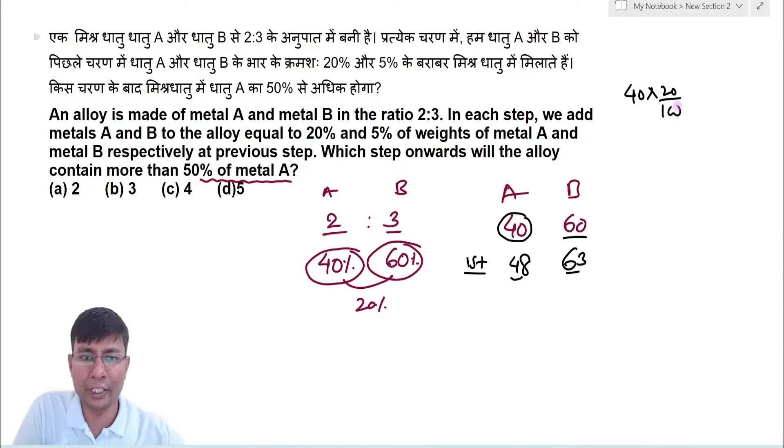48, 20% of 48 - 10% is 4.8, 20% is 9.6. 48 plus 9.6 equals 57.16.